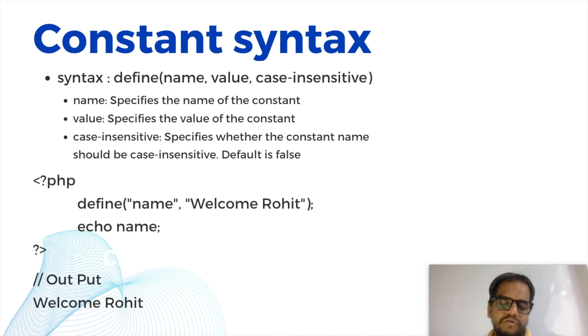We can take an example like define name, welcome Rohit. So we can echo this one. Echo name, the output will be welcome Rohit. So this is the way to write down the constant using the define function.